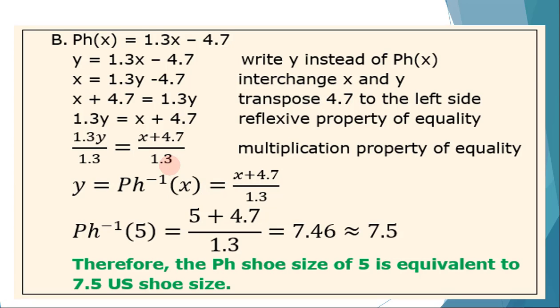And what is the counterpart Philippine shoe size of 5 in the US shoe size? So this now converts a shoe size of 5 in the Philippines and its counterpart equivalent to the US shoe size. So we have here Ph⁻¹(5). Just substitute 5 here. That means we have (5 + 4.7)/1.3 or 7.46. Or we have to round it off to the nearest tenths, so it's 7.5. Therefore, the Philippine shoe size of 5 is equivalent to 7.5 shoe size in the US.